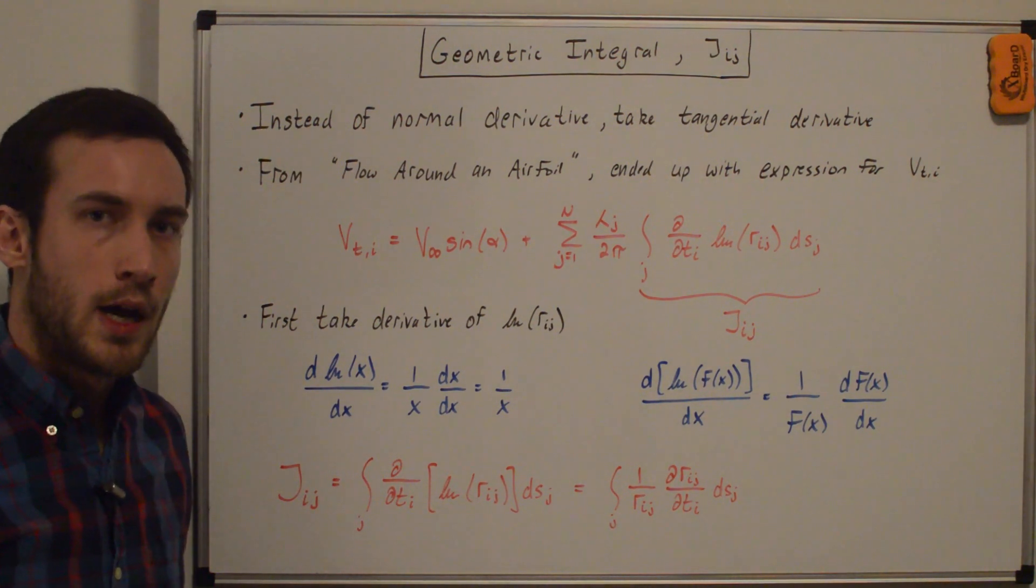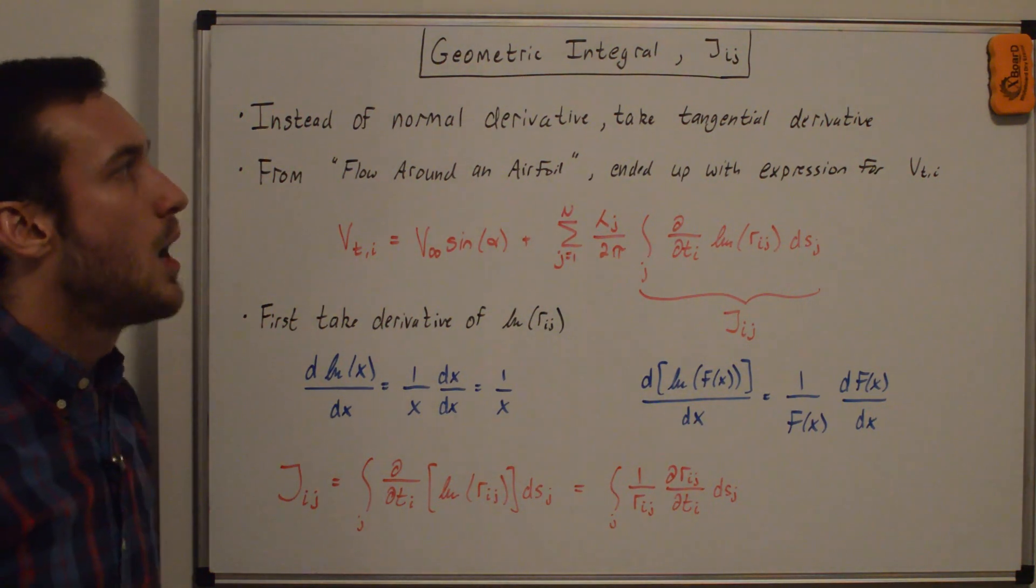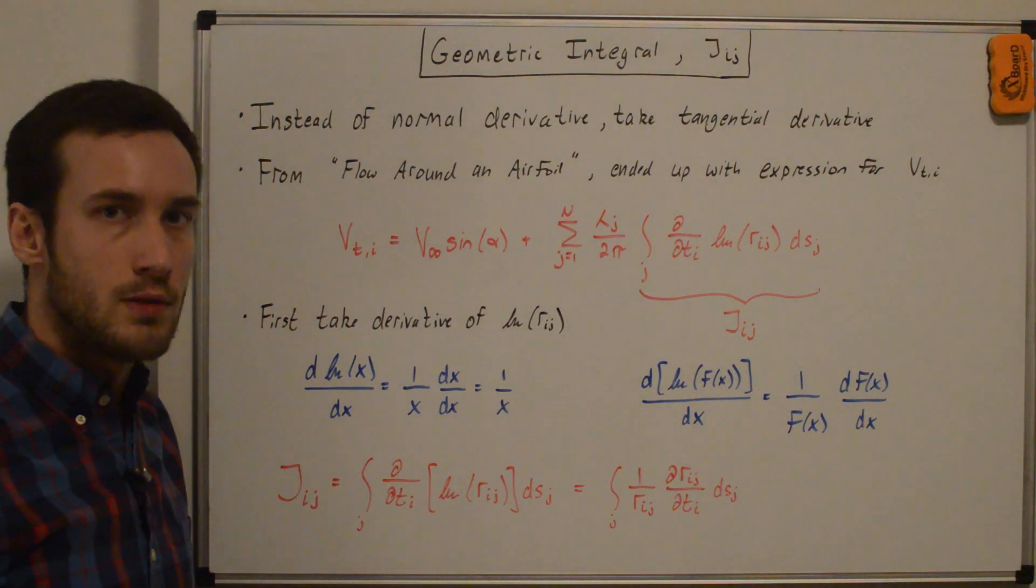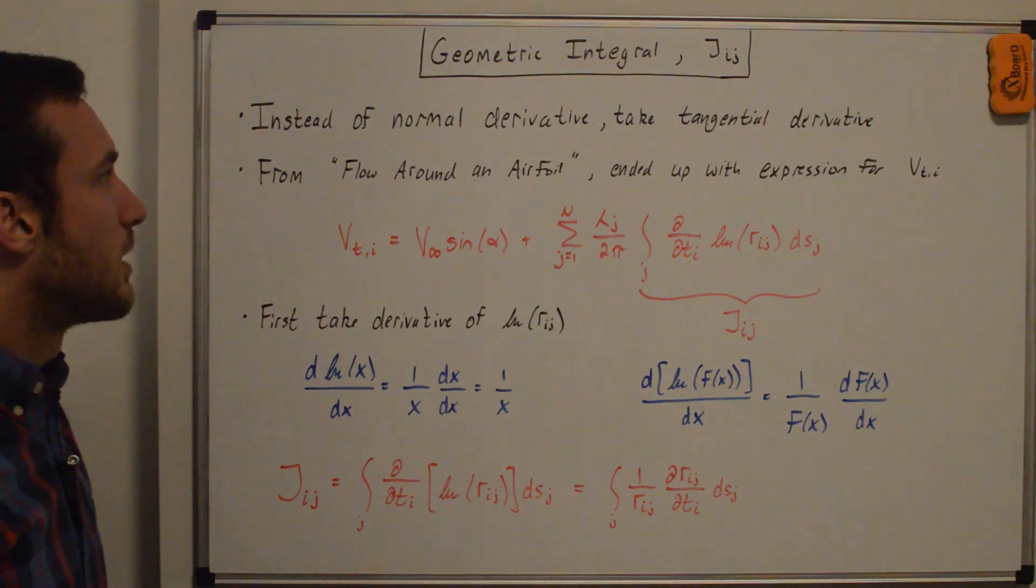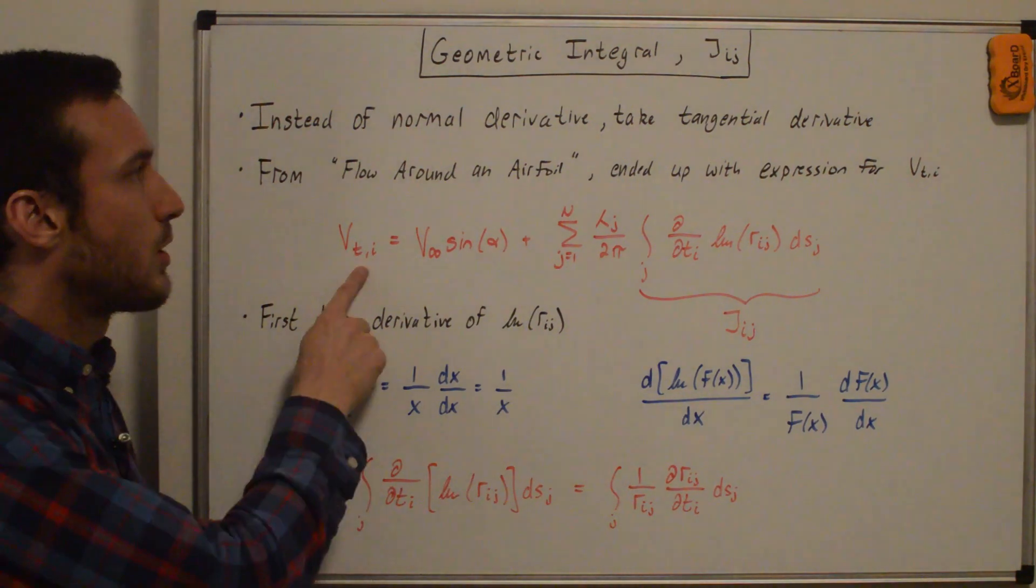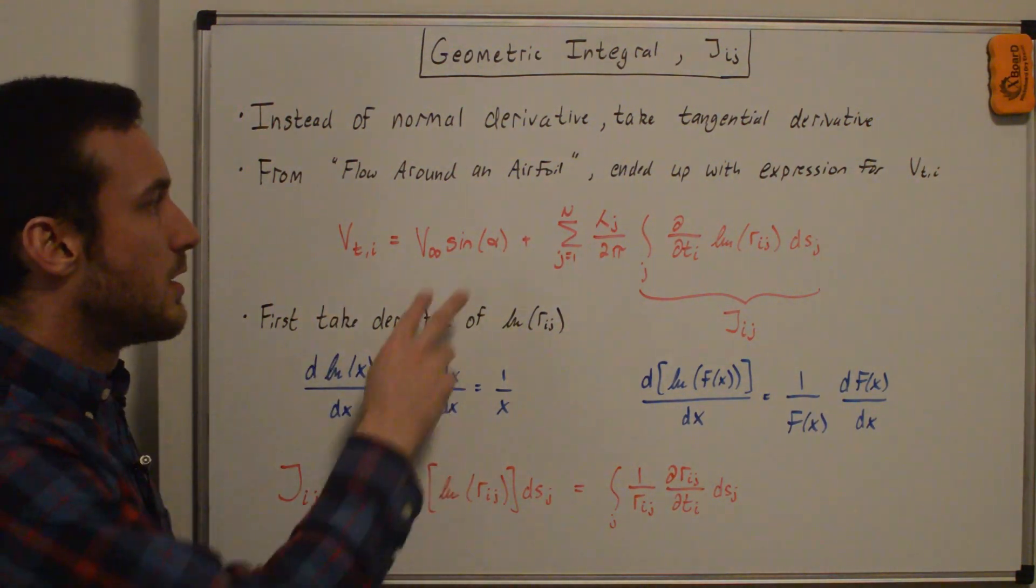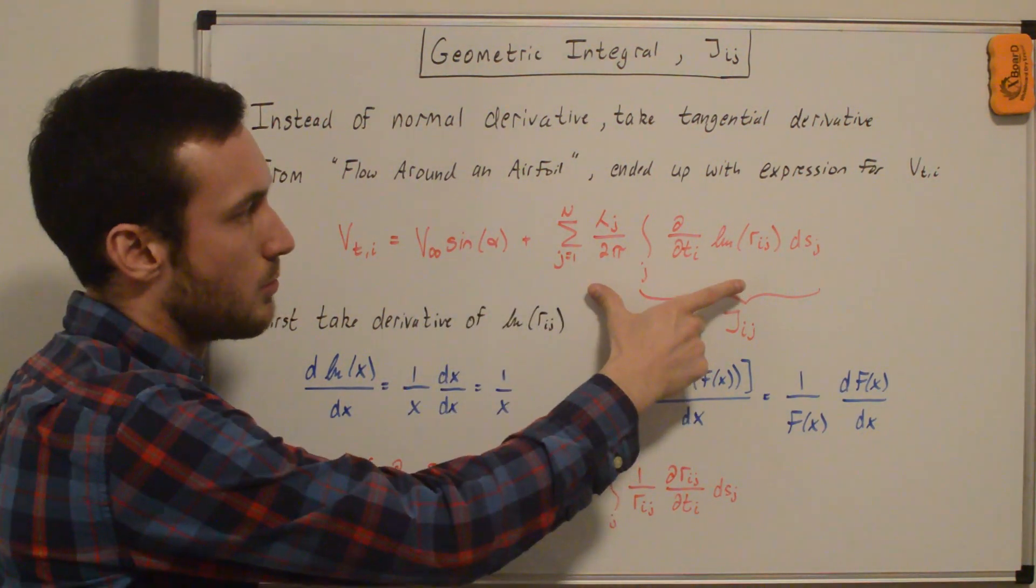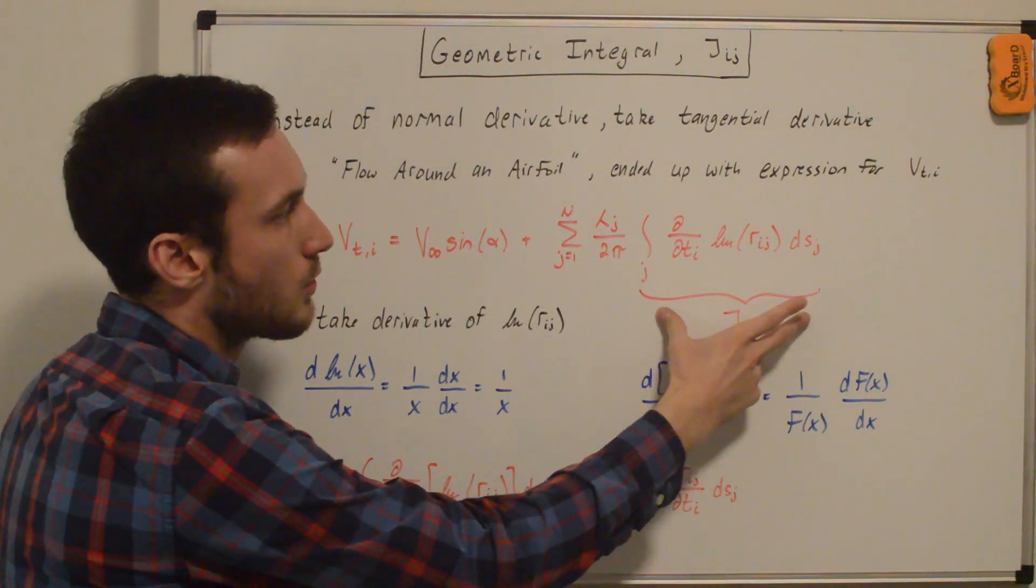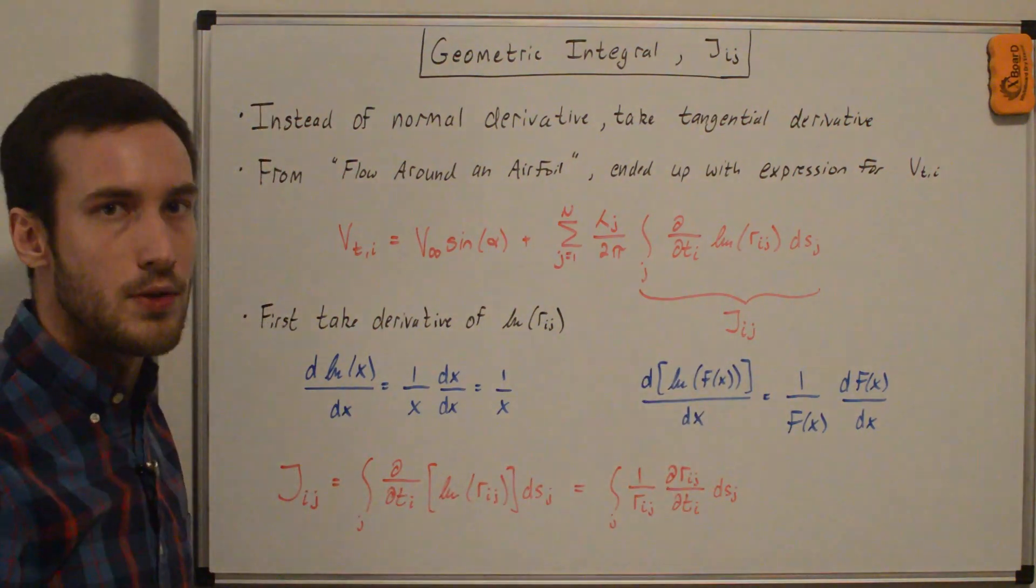So the difference between the iij derivation and this derivation is that instead of taking the normal derivative, we would be taking the tangential derivative of the velocity potential phi. And so for my flow around an airfoil video, we ended up with this expression for the tangential velocity on panel i, where we can see the uniform flow contribution and the source panel contribution with this integral being called jij, and that's what we're going to solve for in this video.